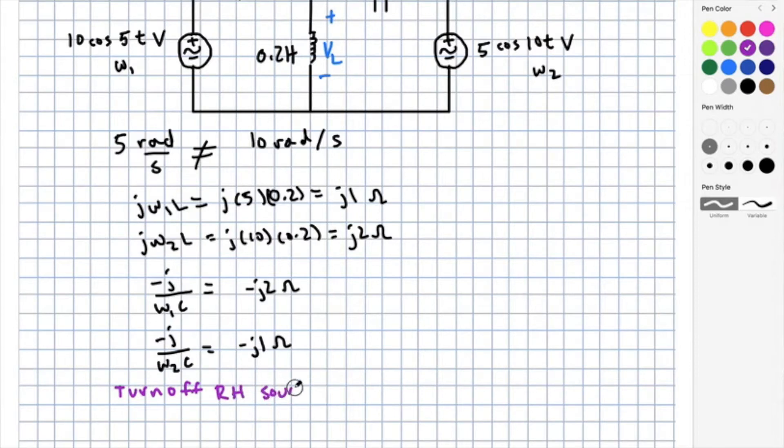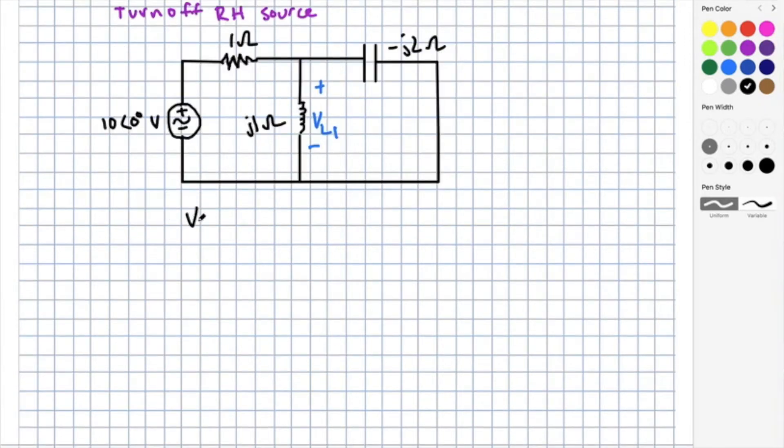To evaluate these, let's start by turning off the right-hand source. When I do so, I'm going to use voltage division to find the voltage across the parallel combination of the inductor and the capacitor. To find the voltage here, I'm going to take J 1 in parallel with negative J 2 divided by 1 plus J 1 in parallel with negative J 2 and multiply that by the source voltage 10. I forgot to write that, but what we will get at the end is a voltage that is 8.94 angle 26.6 degrees volts.